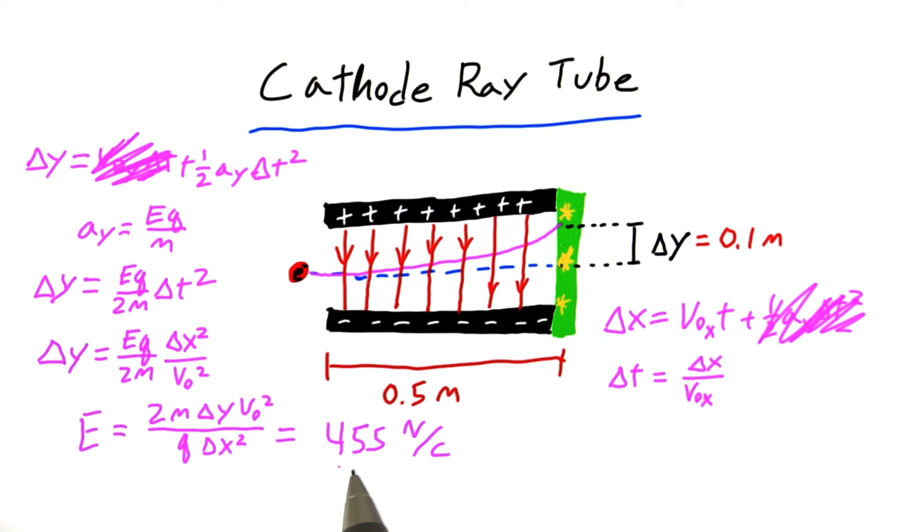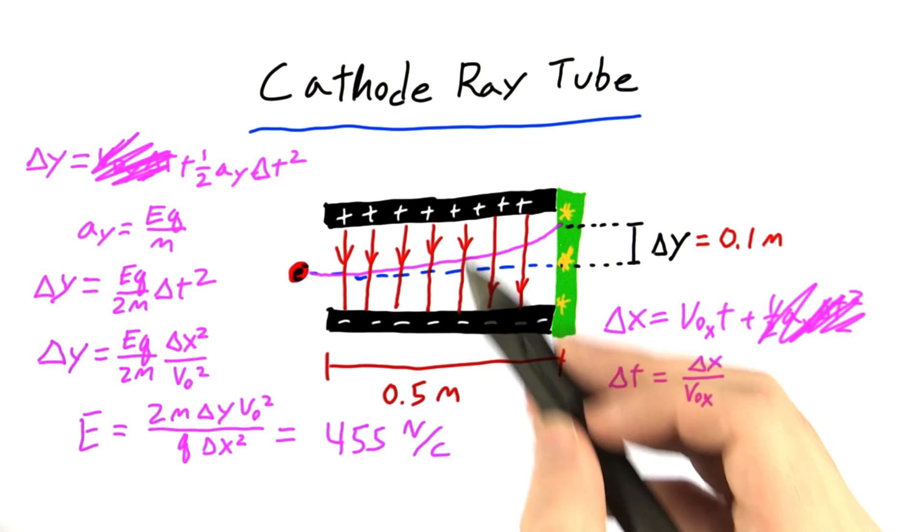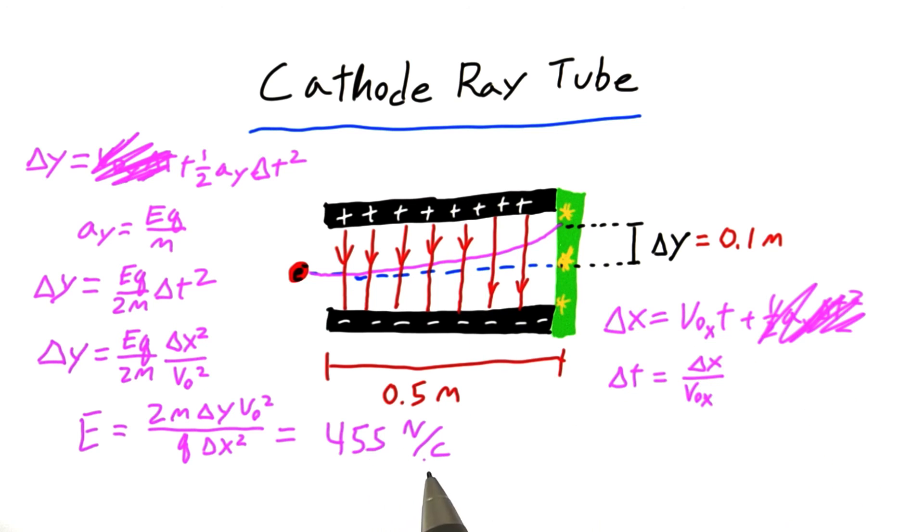I get that the electric field strength should be 455 newtons per coulomb. So that means that if the electric field here is 455 newtons per coulomb, we should get this kind of bending and hit this part of the screen.